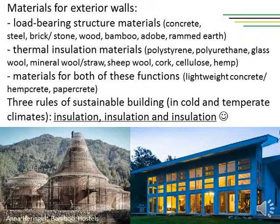Sometimes materials of higher embodied energy significantly lower operational energy, as in the case of thicker thermal insulation. The three rules of sustainable building are insulation, insulation, and insulation — this is of course a joke, but super-insulation design was an ancestor of today's passive house design. Different materials are suitable for different climates: on the left we can see hostels in China near Shanghai made of stone, rammed dirt and bamboo by architect Anna Herringer, who employed local craftsmen. And on the right we can see a house in Canada near Ontario made of straw bales to passive house standards.